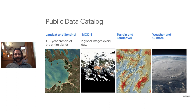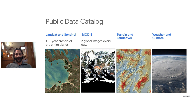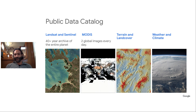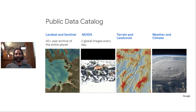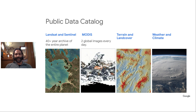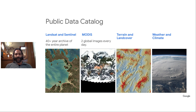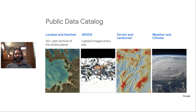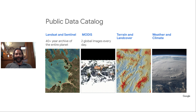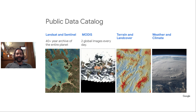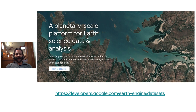The core of Earth Engine is really the public data catalog. There's a lot of information in here — all of Landsat, all of Sentinel, most of MODIS, terrain, land cover data, weather and climate data, and of course much more. To discover what's in there, you can search the data catalog. Here's a link that will take you to pages that describe what's in there and let you search for the data sets that might be important to your analysis.